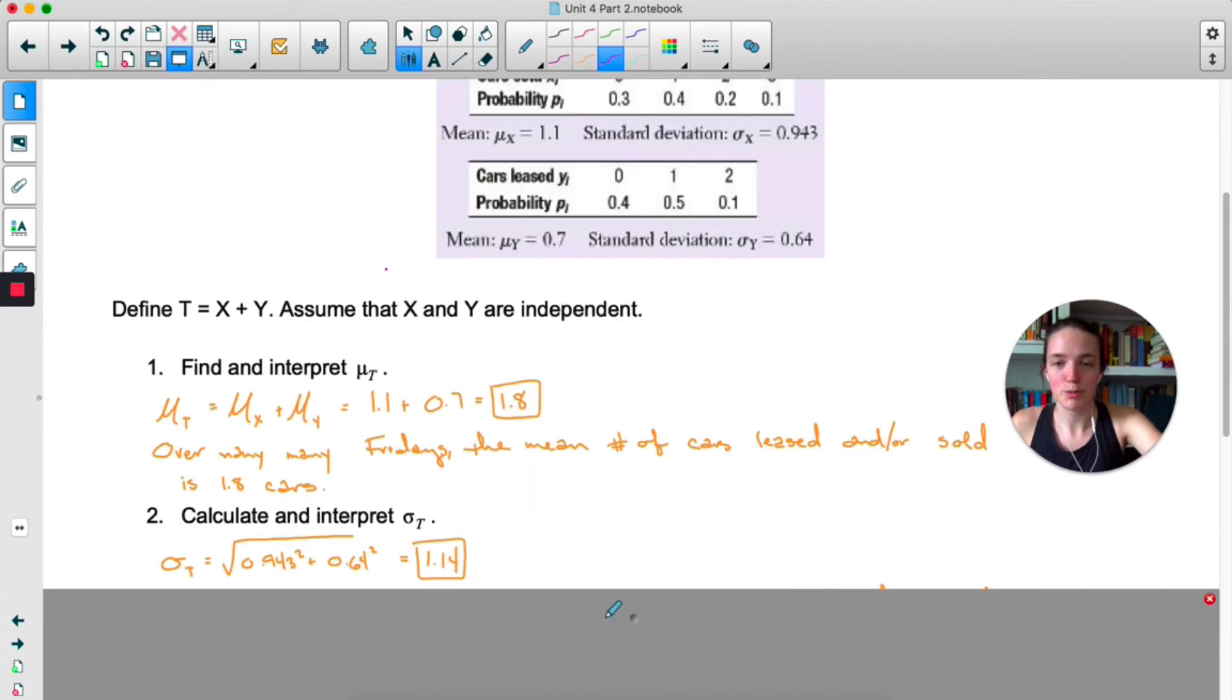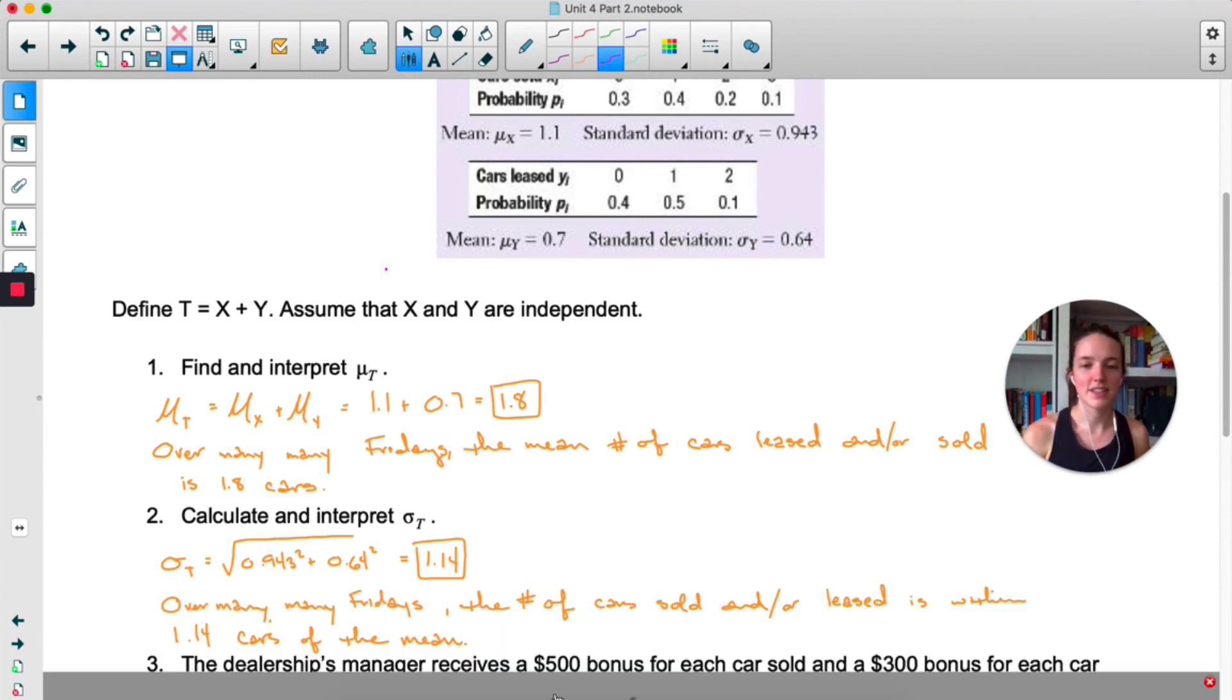For standard deviations, remember that one does not simply—feel free to get into character there—one does not simply add standard deviations. So we have to take each standard deviation, square them to make them variances, add them together, and then take the square root. Over many, many Fridays, the number of cars sold slash leased is within 1.14 cars of the mean, or around 1.14 cars away from the mean.